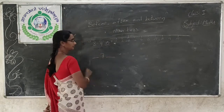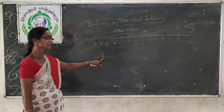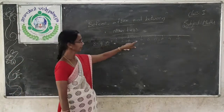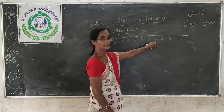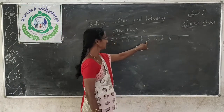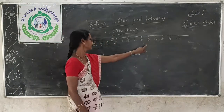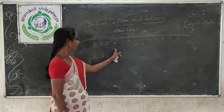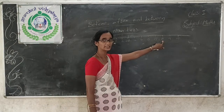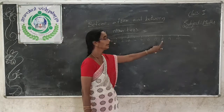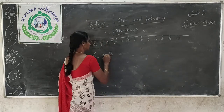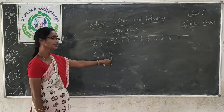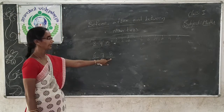One more example: 7. See, 7 is there. Which number comes before 7? 6. So 6 is the before number. And after 7, which number is there? 8. So 6 comes before 7 and 8 comes after 7.